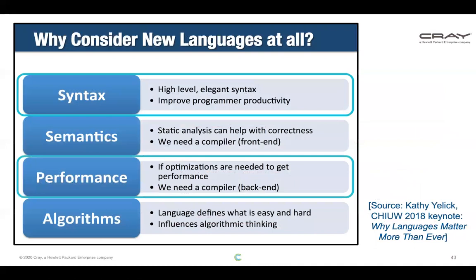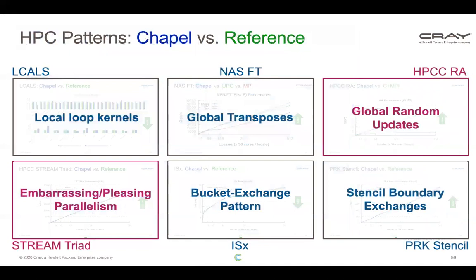With the MPI code, there's so much more detail and it's so explicit about how things should be done rather than simply what should be done, that it will be very difficult for a compiler to ever automatically get the same performance. Returning to Kathy Yellick's slide, this is an example where good syntax let the programmer write code more simply and exposed to the compiler more straightforwardly what the code should be doing, allowing better performance.